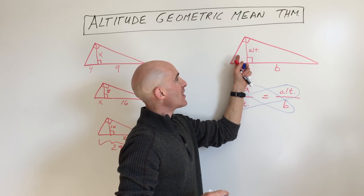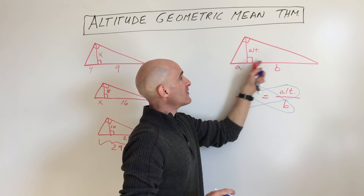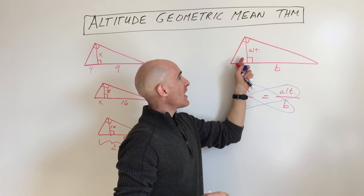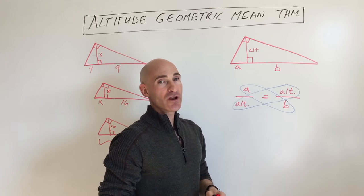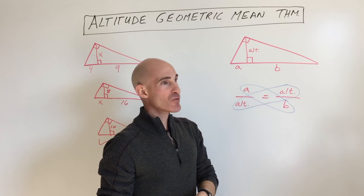What happens is you end up with three similar triangles: this small one, this medium one, and this overall right triangle. These triangles are all similar to one another. The corresponding angles are congruent, and the corresponding sides are going to be proportional.